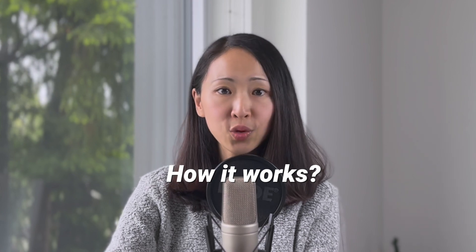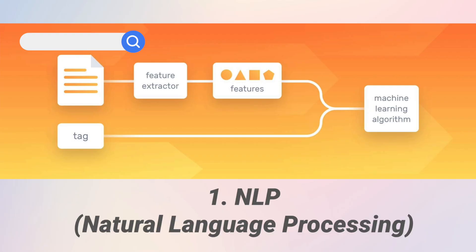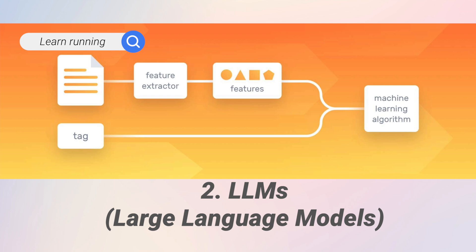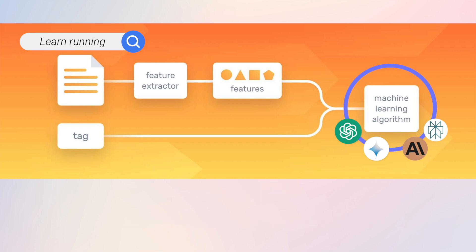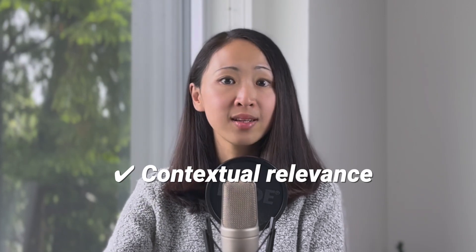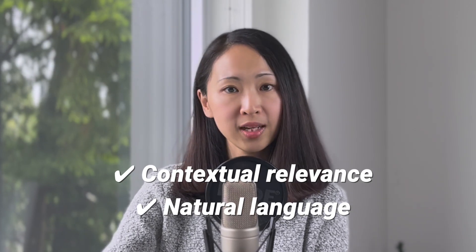Before we know how to optimize for AI search, we must understand how it works. There are two key components. First, NLP (Natural Language Processing) is used to process the query and extract search intent and context. Second, these understandings are passed into Large Language Models (LLMs) like GPT, Gemini, or Claude to generate a concise, contextual response by synthesizing data sources. Once you understand this, you'll see why improving contextual relevance and using natural language is so important.